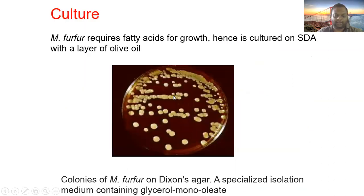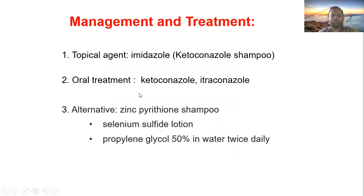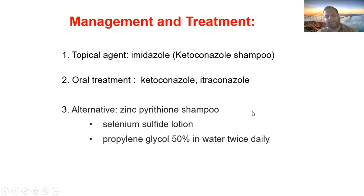For culture, since Malassezia furfur is lipophilic, standard Sabouraud Dextrose Agar (SDA) must be enriched with olive oil or Tween 80 to provide lipids. Another specialized isolation medium is Dixon's agar, which contains glycerol monooleate. For management, topical imidazoles such as ketoconazole are used. For extensive or unresponsive cases, oral ketoconazole or itraconazole is given. Alternatives include zinc pyrithione, selenium sulfide lotion, and propylene glycol 50% in water applied twice daily.